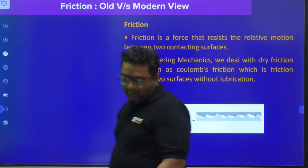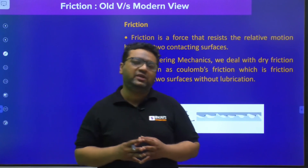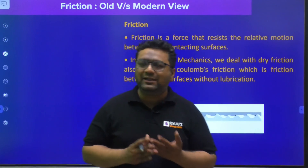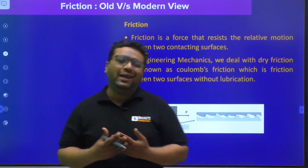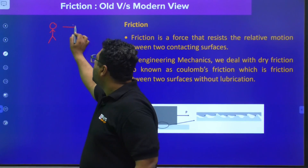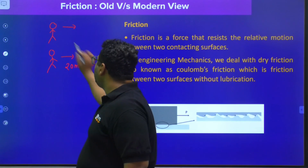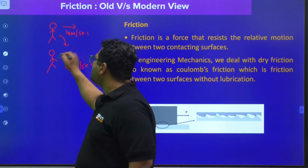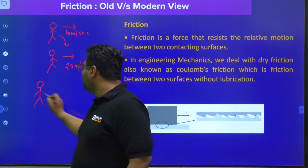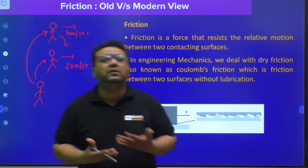Today's topic is old and modern views of friction. We already know that friction is a resistance force which generally comes to resist relative motion. For example, if I am moving with 10 meters per second and someone else is going with 20 meters per second, then relative to me, that person is moving at 10 meters per second — that is relative velocity. But if you are standing still, you'd say I'm moving at 10 and he is moving at 20 — that is absolute velocity. Friction has nothing to do with absolute velocity; it deals with relative motion.